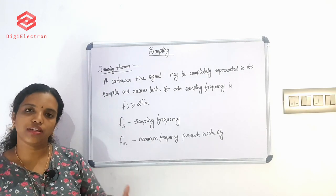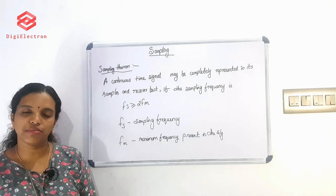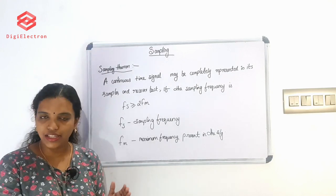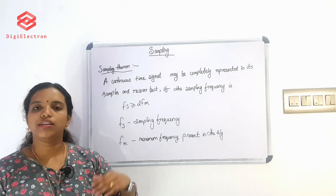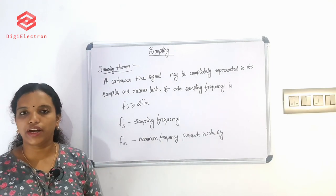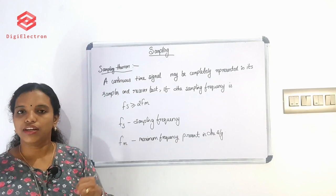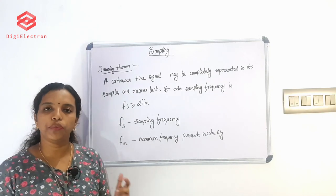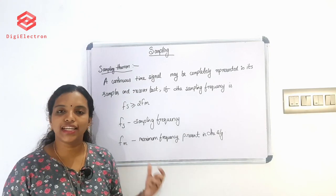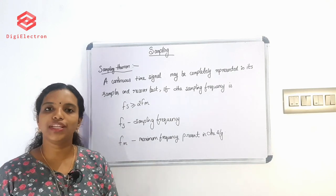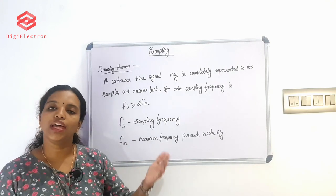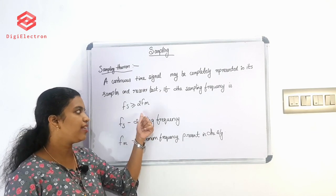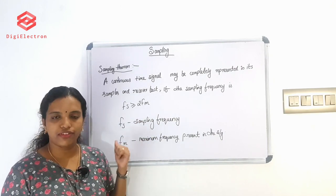The sampling theory states the continuous time signal is completely represented in sample form. On the receiver side, if we have those samples, we can recover the signal. So the condition is Fs greater than or equal to 2Fm.